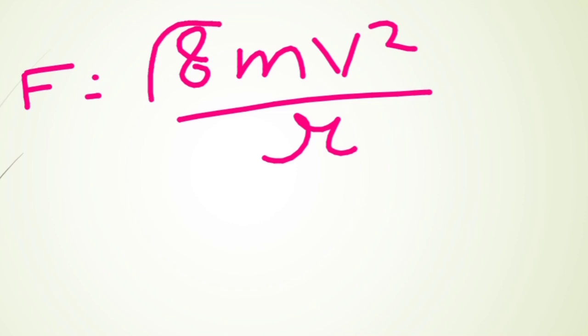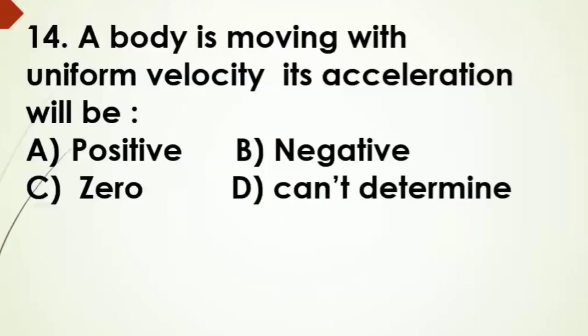Now the 14th question: a body is moving with uniform velocity, its acceleration will be - A) positive, B) negative, C) zero, D) cannot be determined. And the answer is zero.